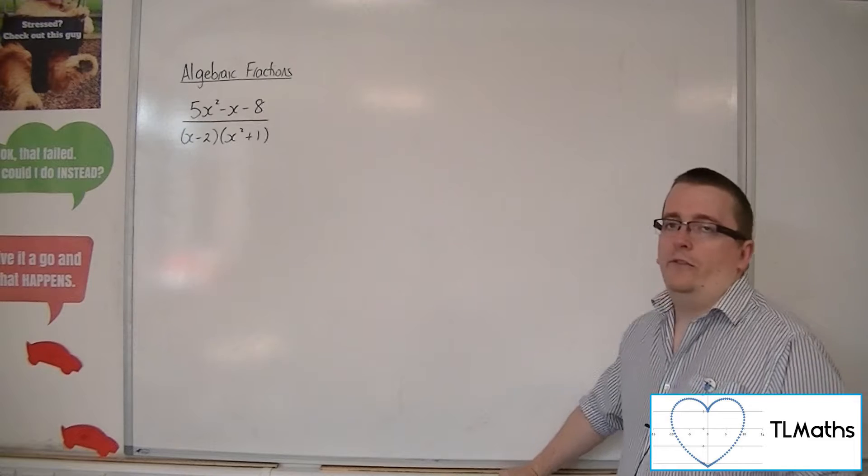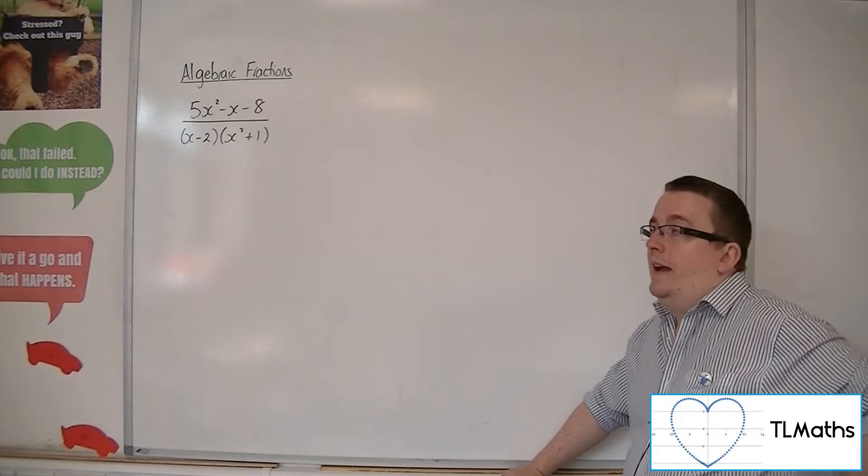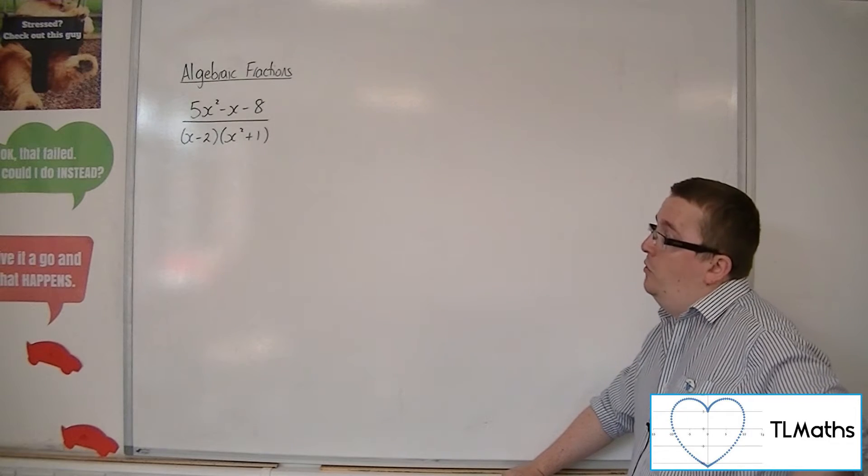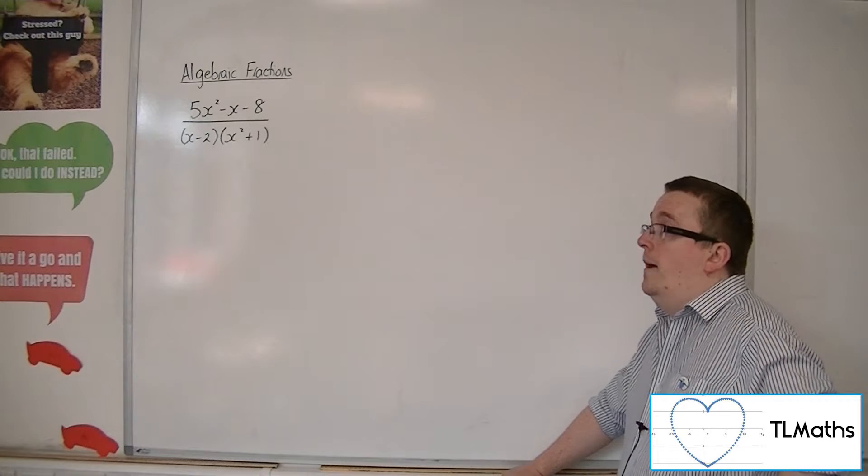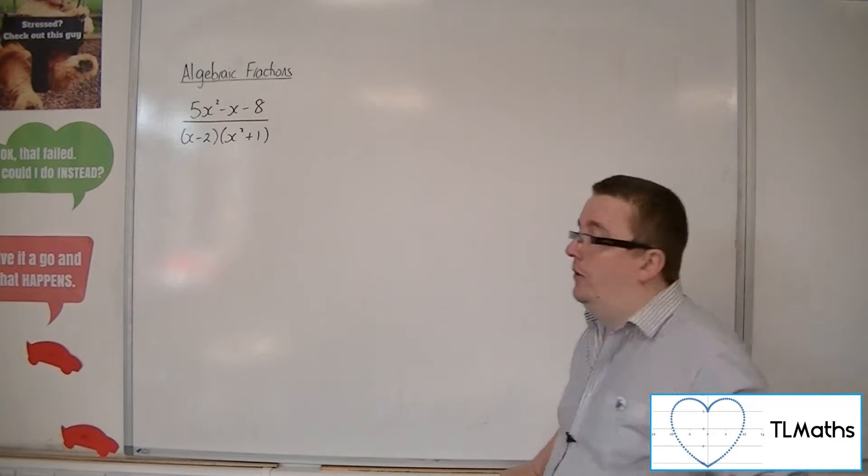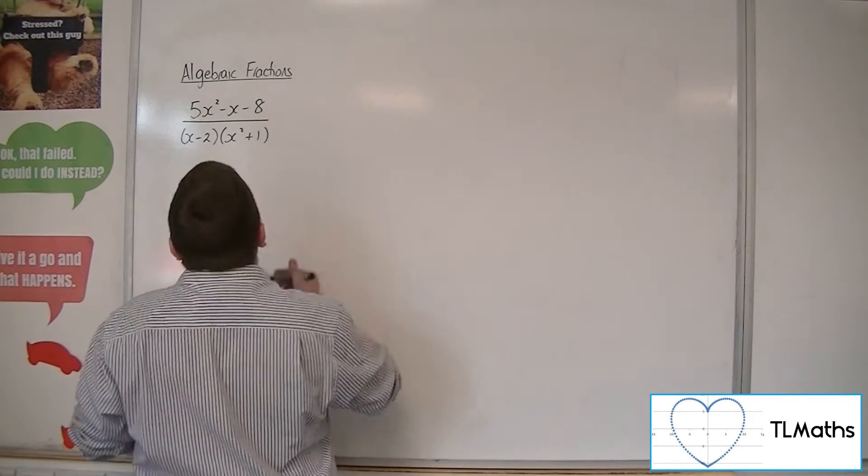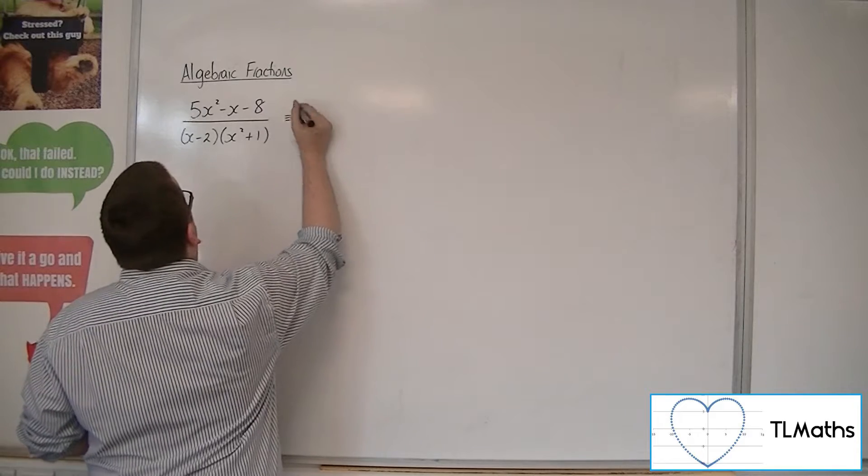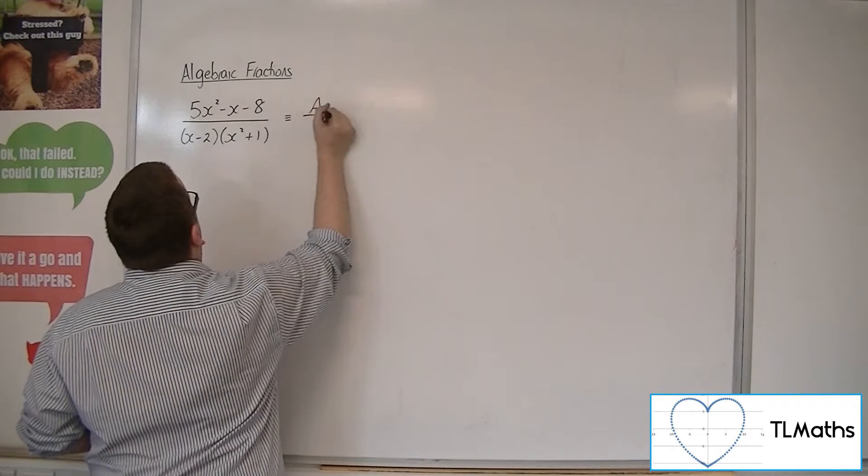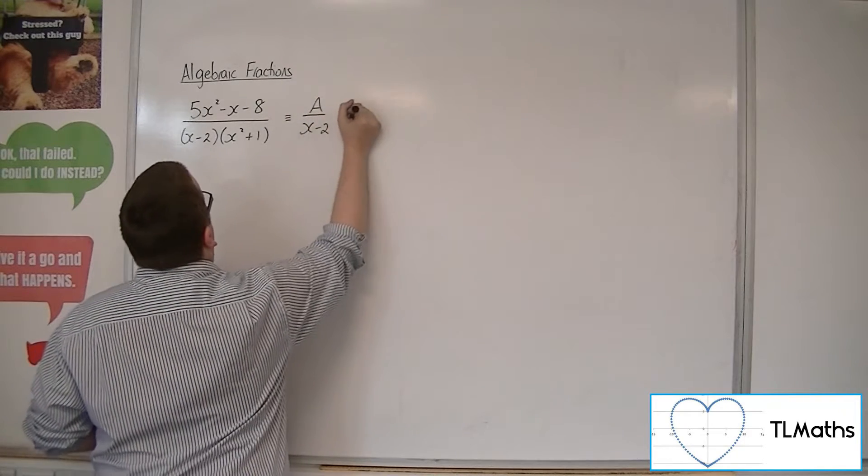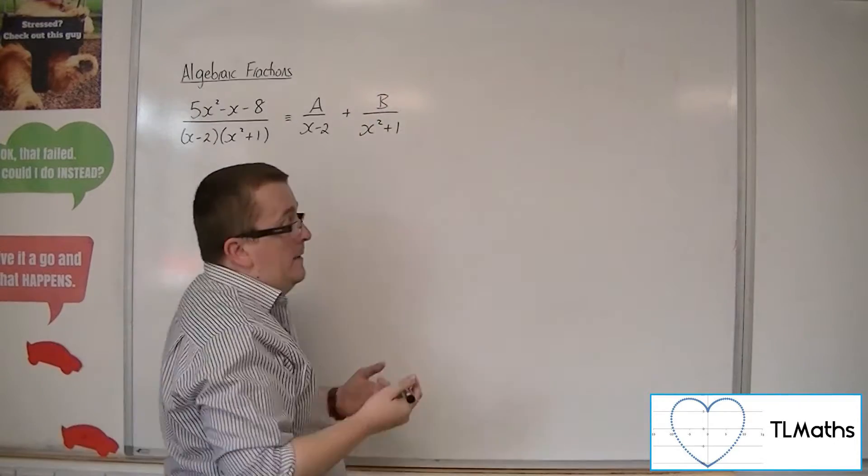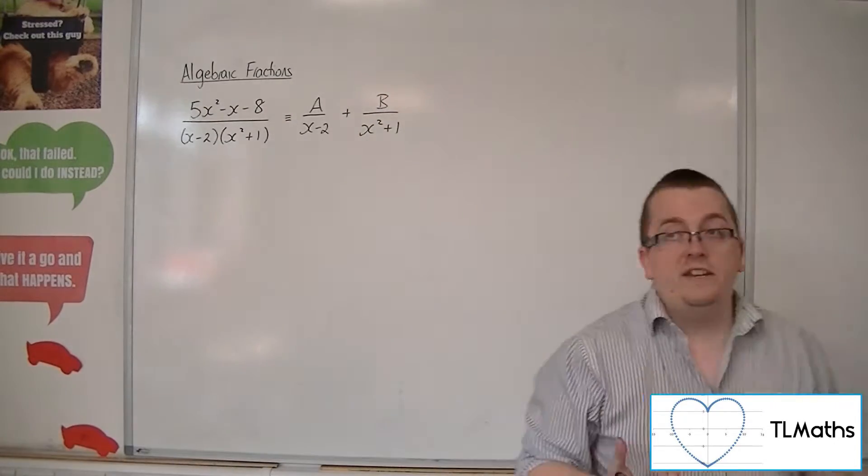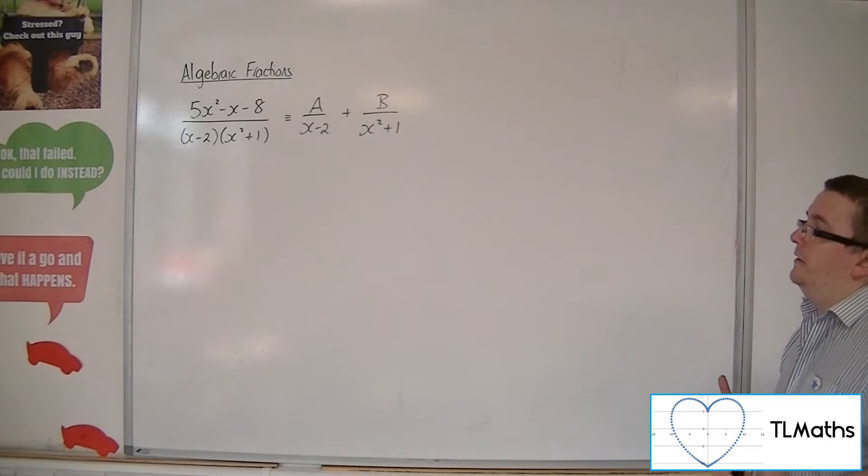Because now we have a situation where we have a quadratic term that will not factorise in the denominator. So our initial guess might be that we should be able to write this as A over x minus 2 plus B over x squared plus 1. Okay, that might be our initial idea to this.